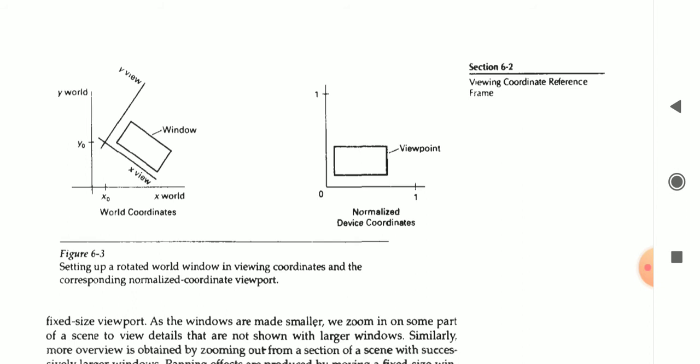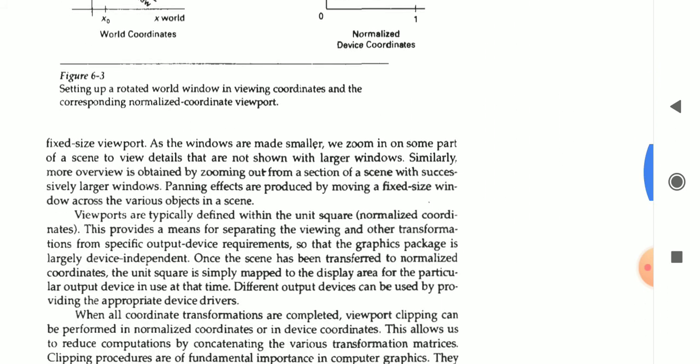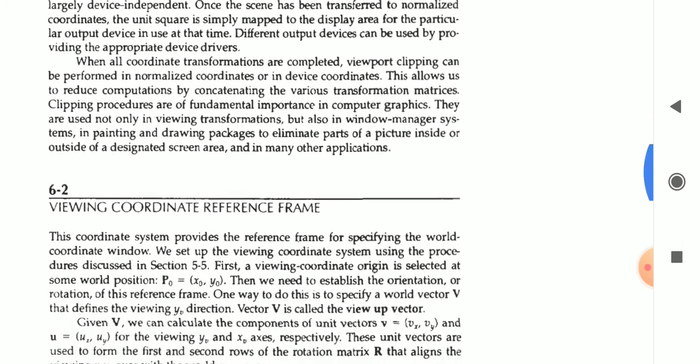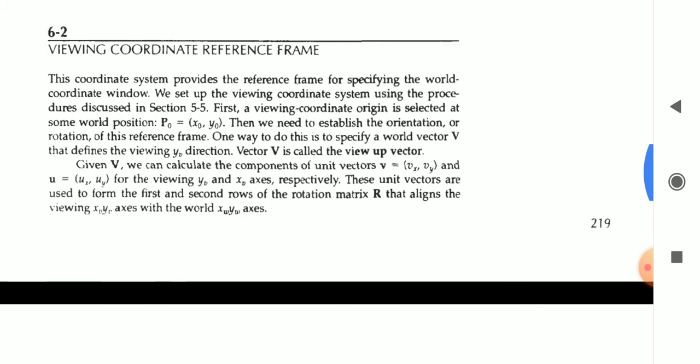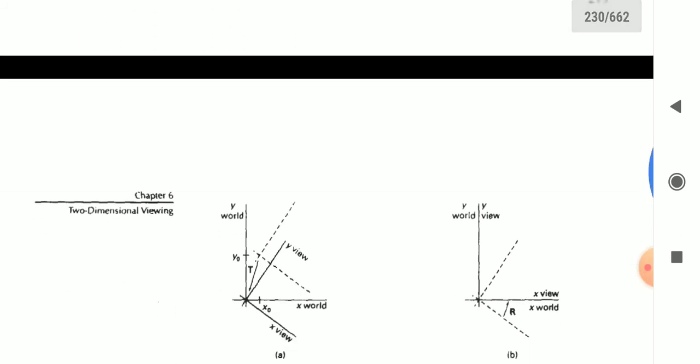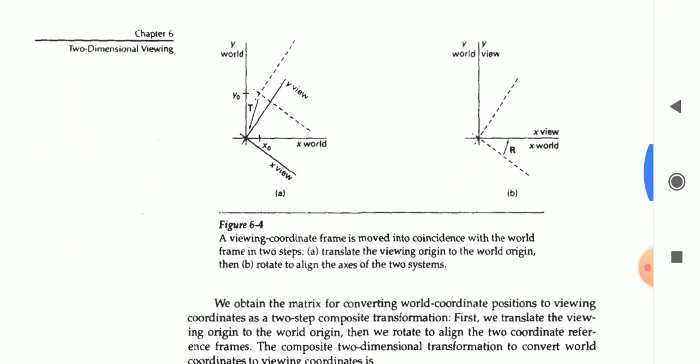It is setting up the rotated world coordinate to the viewing coordinates and according to the normalized coordinates. What are the operations has been performed here? The actual triangle has taken some type of operation. Can you see the operation? These are the operations, rotations and translation has been done. We will see the other diagram.